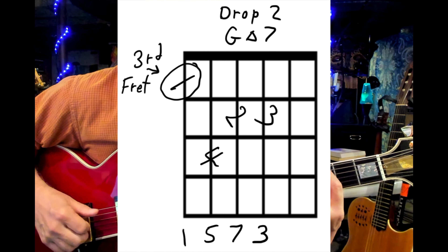What's good to do with these voicings is find all the diatonic seventh chords in your different keys. So if we do G, you have G major seven, A minor seven, B minor seven, C major seven, D dominant seven, E minor seven, F sharp minor seven flat five, back to G major seven. Those are all drop three chord forms with the six-string group.